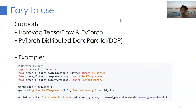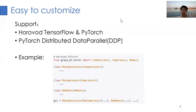Next, I will show you an example of how to integrate GRACE into your training script. Currently, GRACE supports the Horovod PyTorch and TensorFlow versions, and also the PyTorch distributed data parallel backend. The example shown here is for Horovod PyTorch. First, you need to import three main components from the GRACE library and use them to create a GRACE instance. Then, all you have to do is pass this GRACE instance to the Horovod distributed optimizer. The compression, decompression, and communication process are totally invisible to the end user.